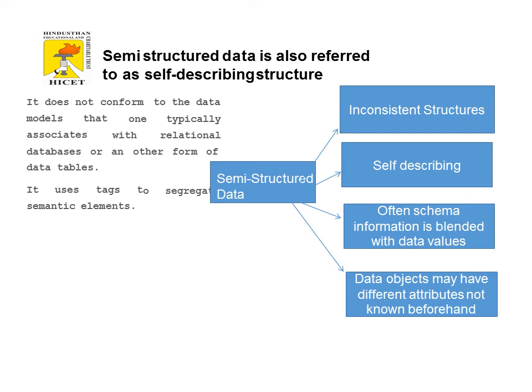Semi-structured data, also referred to as self-describing structured data, contains a schema with blended data values where objects may have different attributes not known in advance. We need a separate tag to define its structure. Normally, it is represented as XML or JavaScript Object Notation (JSON).